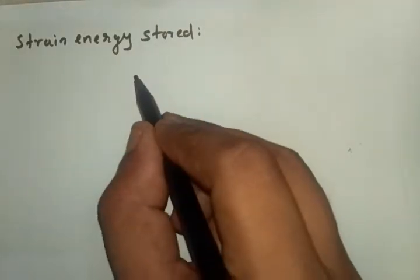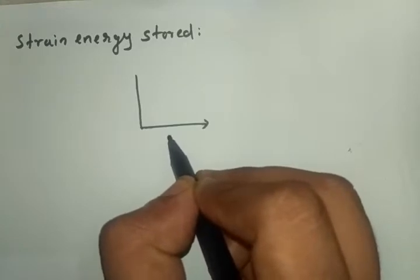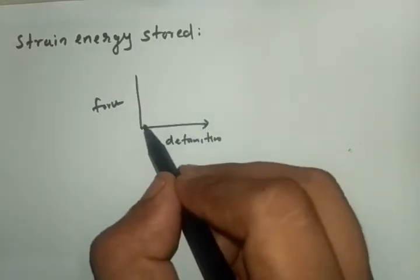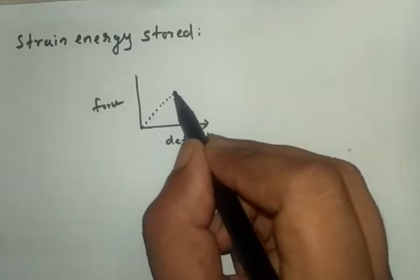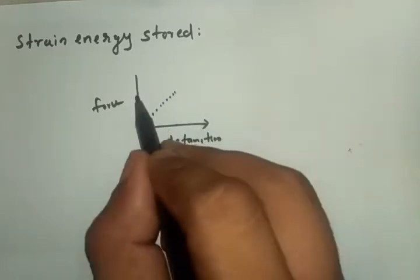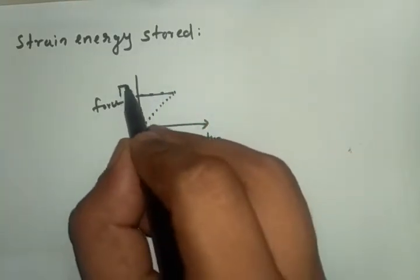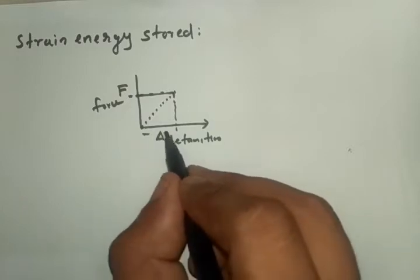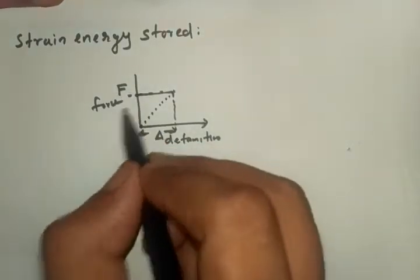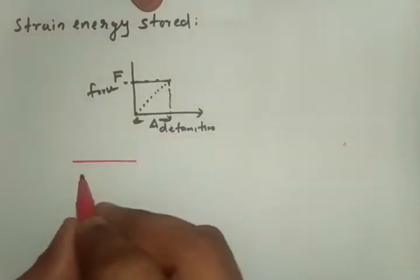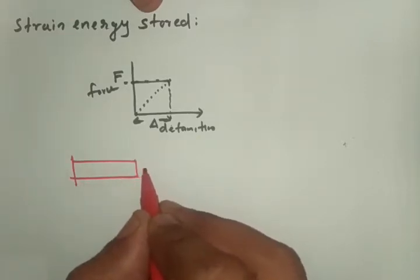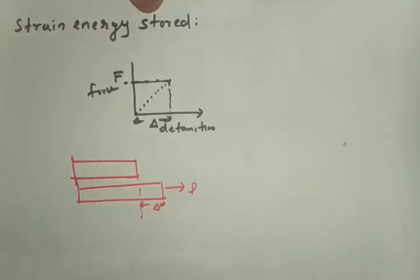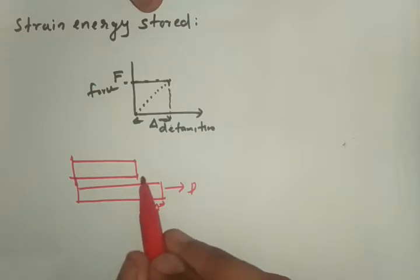Now, consider the force-deformation graph. On the x-axis we have deformation and on the y-axis we have force. The force is applied gradually from zero and at every corresponding force there is a deformation. It finally reaches a force of P with a corresponding deformation of delta.